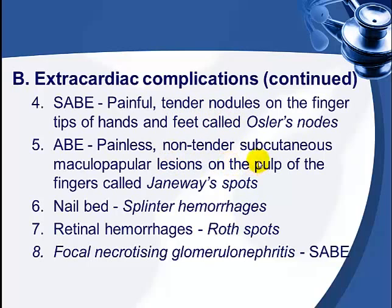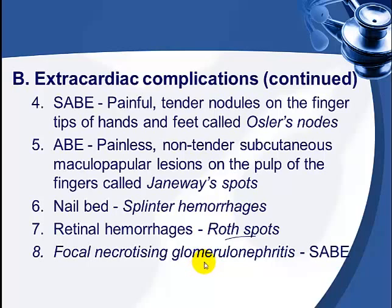Painful, tender nodules on the fingertips of the hands or toes are called Osler nodes. Non-tender, painless macular-papular lesions on the pulp of the fingers are called Janeway lesions. On the nail beds, patients may have splinter hemorrhages. In the retina, fundoscopy reveals Roth spots — whitish spots visible on examination. Emboli reaching the kidneys can trigger an immune reaction; immune complexes entrapped in the kidneys may lead to hematuria, albuminuria, renal failure, and focal necrotizing glomerulonephritis.